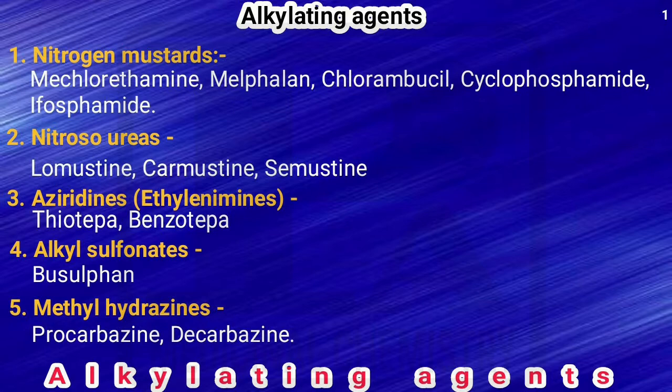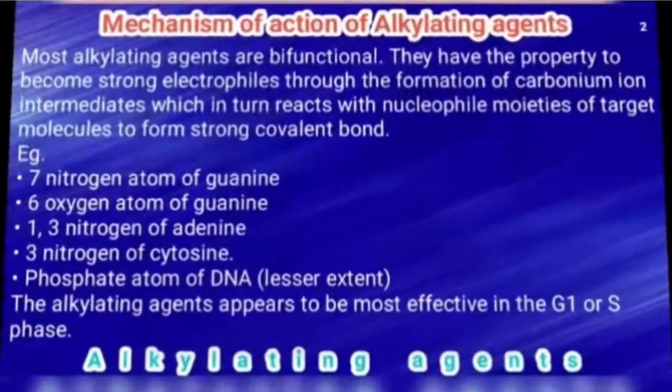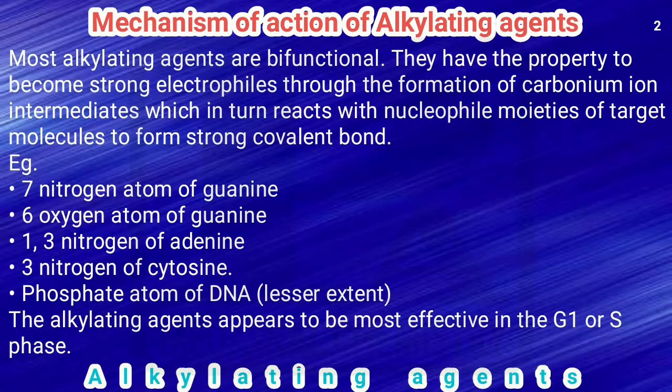The fourth subclass is alkyl sulfonates — the only example is busulfan. The last subclass is methyl hydrazines — examples are procarbazine and dacarbazine. Now we'll see the mechanism of action of alkylating agents. These alkylating agents are bifunctional; they form carbonium ion intermediates and act as strong electrophiles.